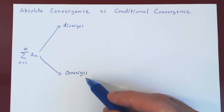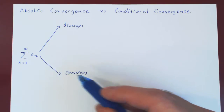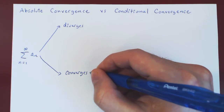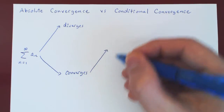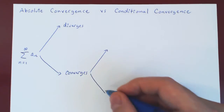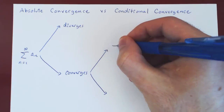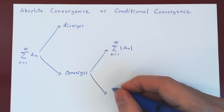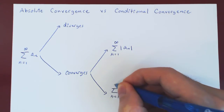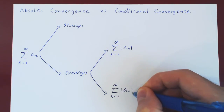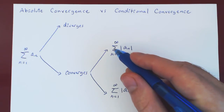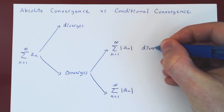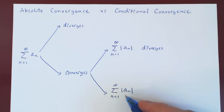But if the series converges, then we can look at a new series, namely the series of the terms aₙ now in absolute value. And there are, of course, two possibilities: the series of absolute values can either converge or diverge.